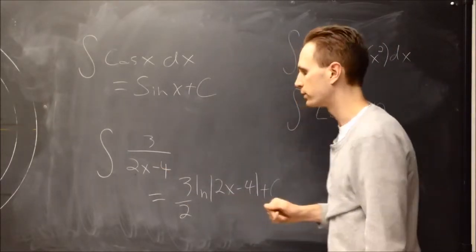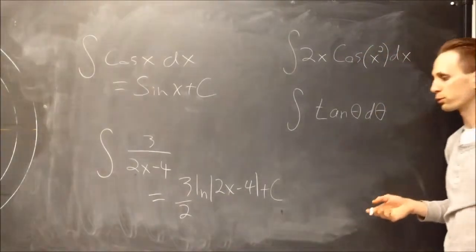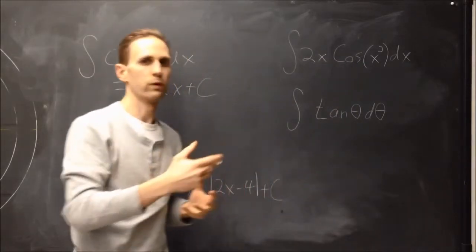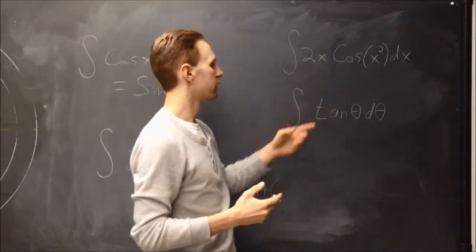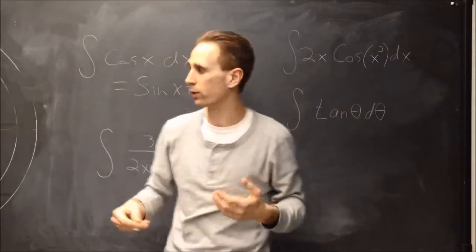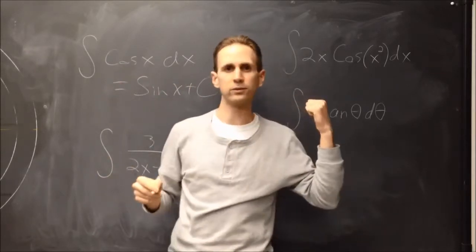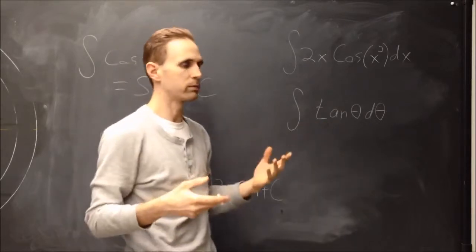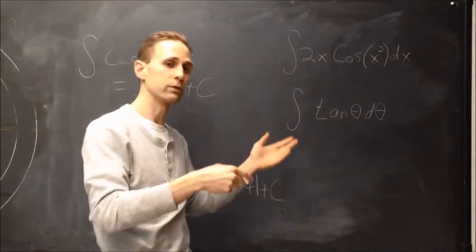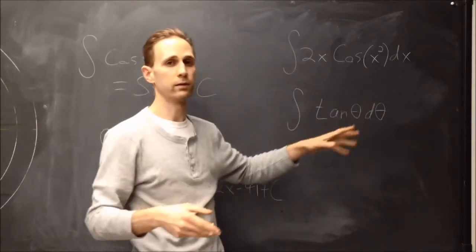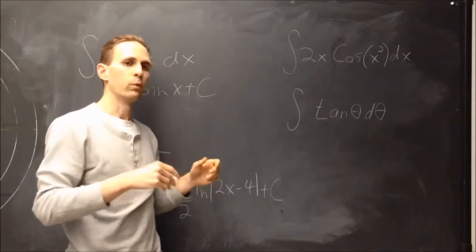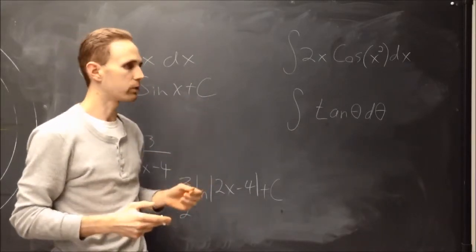But then there are other kinds of anti-derivative problems where the answer is not immediately obvious, or it's not clear that the integrand is a straight-up derivative of something. Two such cases are the integral of 2x·cos(x²) and the integral of tan(θ). Nothing differentiates straight to 2x·cos(x²). Similarly, nothing we commonly encounter differentiates straight to tan(θ). We need a technique for figuring these things out — and that technique is called u-substitution.